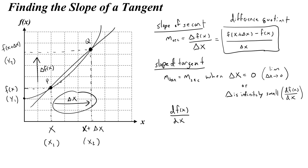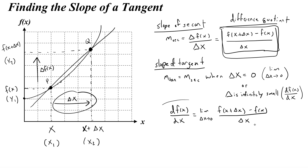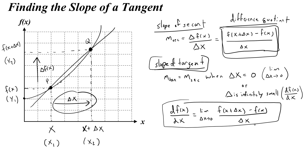This infinitely small change in f over the infinitely small change in x is what we call the derivative. It equals the limit of delta x as it approaches zero of the difference quotient: f of x plus delta x minus f of x, all over delta x. We eventually get an equation that tells us how to find the slope of the tangent line at any point through a deriving process.